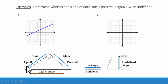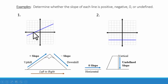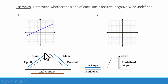Review what we have learned from the last slide. In number one, we are going uphill from left to right. When we go uphill from left to right, we have a positive slope. So for number one, the slope is positive.